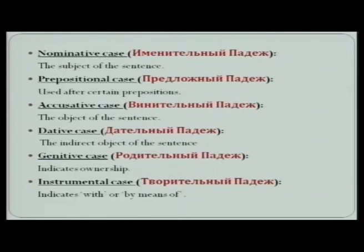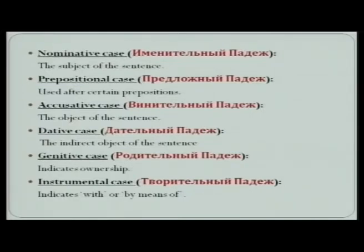The next case is dative case, which talks about the indirect object of the sentence. Dative case is called dachilni padiyej in Russian. The next one is genitive case, or rozhi chilni padiyej, and it indicates ownership. The last one is instrumental case, called Tvori chilni padiyej in Russian. The instrumental case talks about the indication or usage of with or by means of — that is why the name instrumental has been given to it.